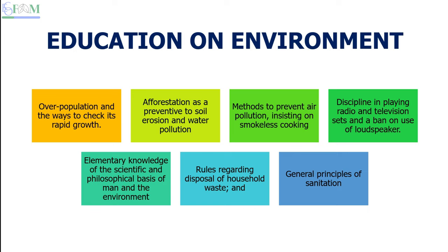Second is afforestation as a preventer of soil erosion and water pollution. Plants hold the soil, so when soil is bound with roots, soil erosion and water erosion are reduced and water pollution is also reduced. To educate people about methods to prevent air pollution, we insist on smokeless cooking. Nowadays we use LPG or natural gas cooking, which leads to very little smoke, and discipline in use of radio, television sets, and a ban on loudspeakers addresses noise pollution.